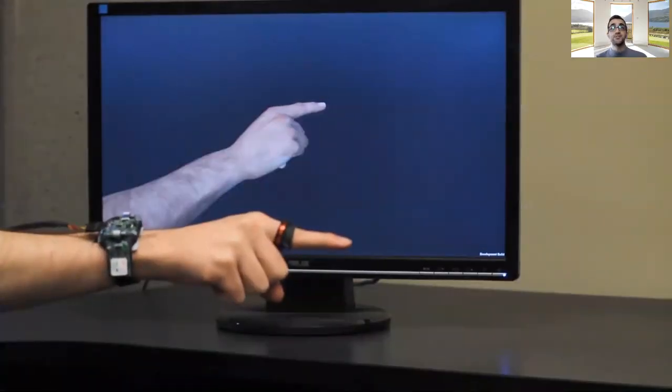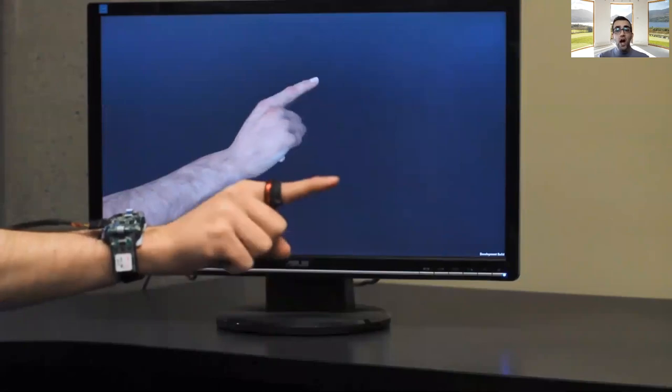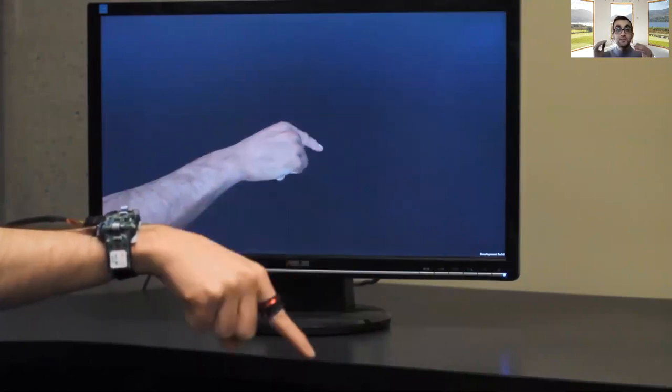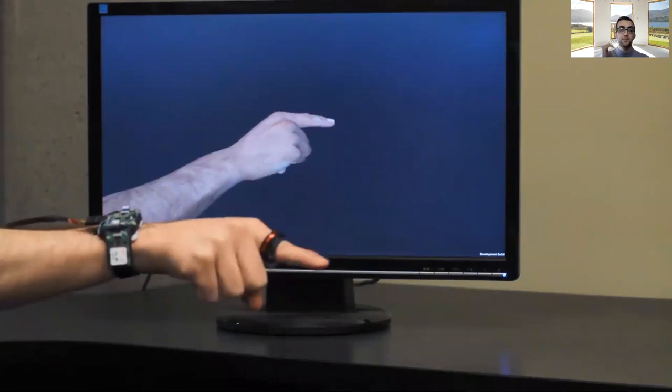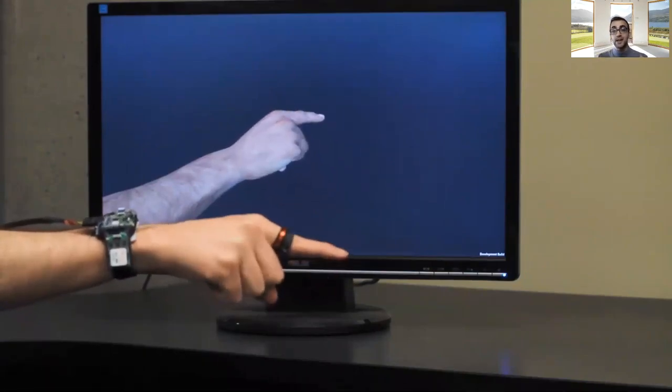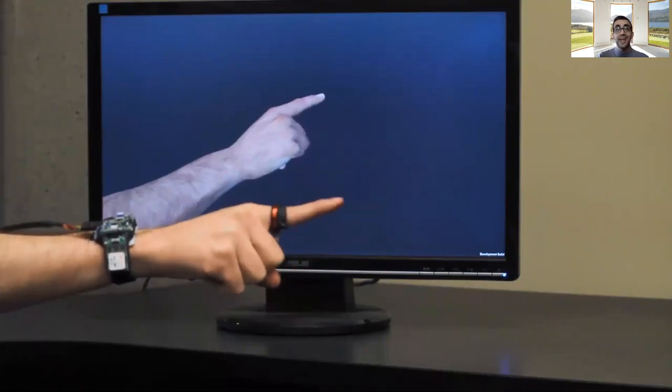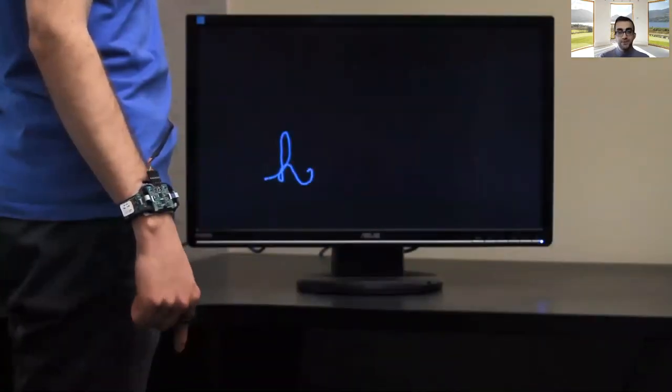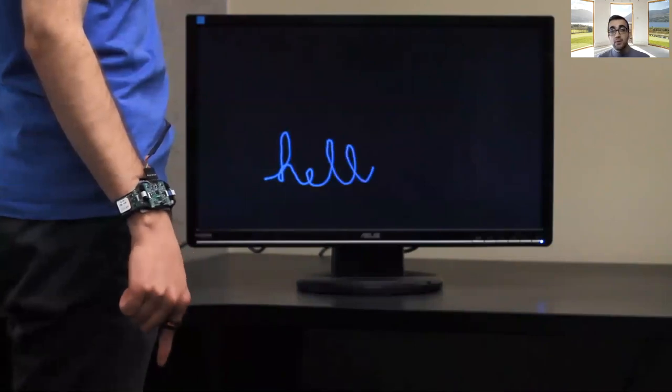To enable precise tracking we've built AutoRing. It's a high precision short range electromagnetic tracking technique that goes beyond discrete events and tracks the pose of the ring with respect to the wristband in real time. So we can use this to reconstruct hand pose or we can build continuous input applications like drawing on top of it.